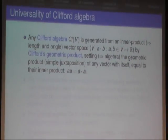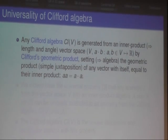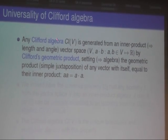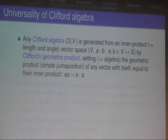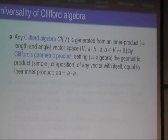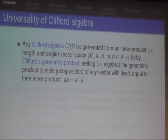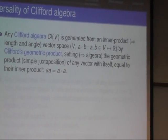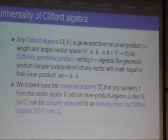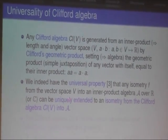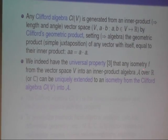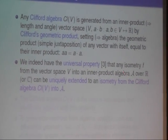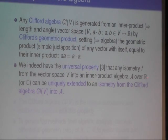And it has a universality aspect. If you have a Clifford algebra over a vector space with an inner product, then by Clifford's geometric product you generate the algebra. The universality is that if you have an isometry from this vector space into another inner product algebra, then you can uniquely extend this isometry map into the whole of the Clifford algebra, just knowing its values in the vector space.